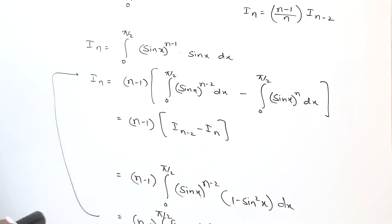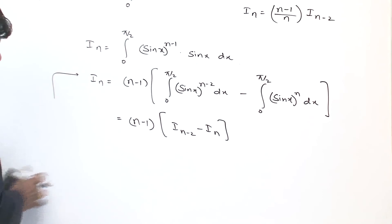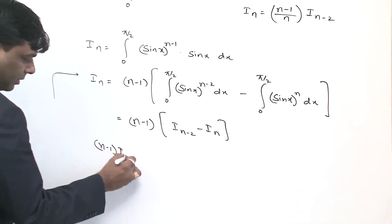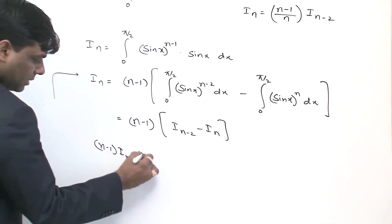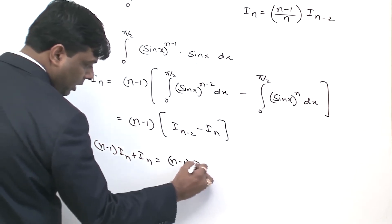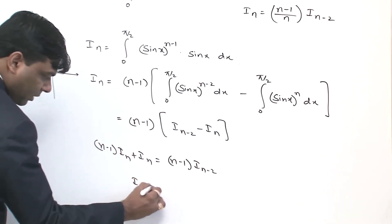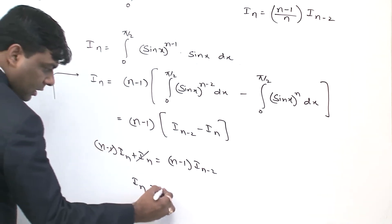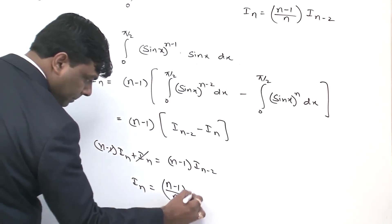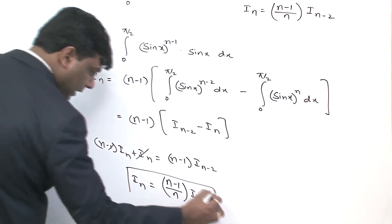Bringing I_n to this side: n minus 1 times I_n plus I_n equals n minus 1 times I_{n-2}, so n times I_n equals n minus 1 times I_{n-2}. That gives I_n equals (n minus 1) upon n times I_{n-2}. So this is proved.